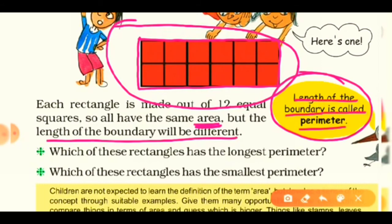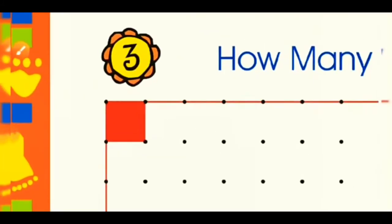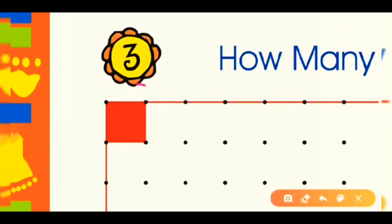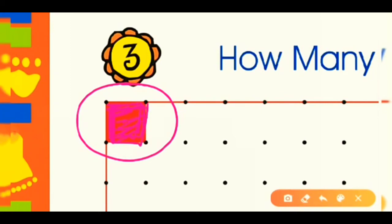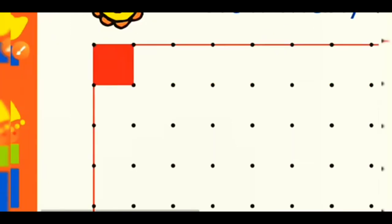Now another word is area — what is an area? The area is the occupied space by a flat shape. For example, this red box is completely filled, and that filled space is its occupied space, which is its area. In another way: the amount of space inside the boundary of a flat object such as a rectangle, circle, or square is known as its area. We have given two definitions of area.